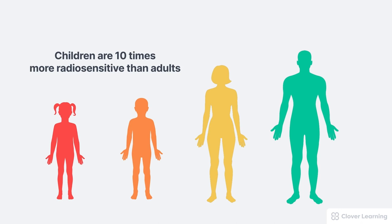This means that if a child and an adult are exposed to the exact same dose of radiation, the child would be about 10 times more likely to experience a radiation-induced cancer at some point in their life.